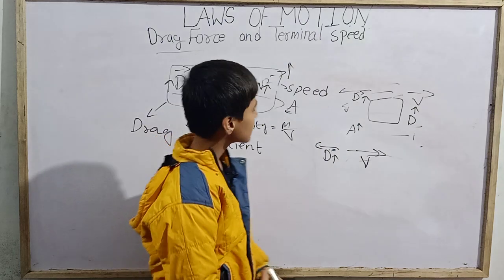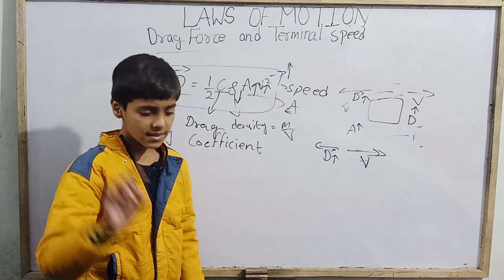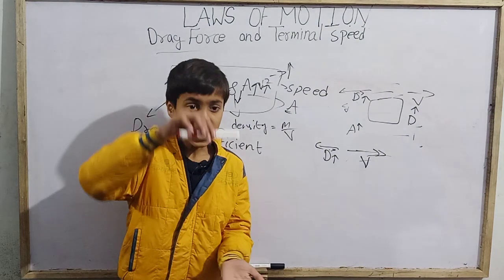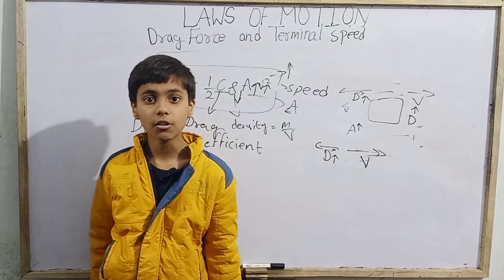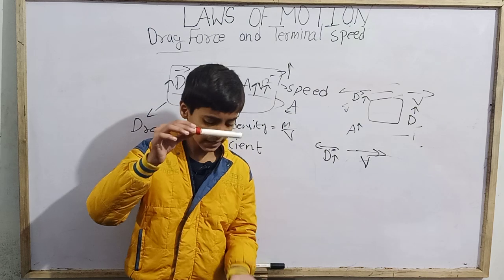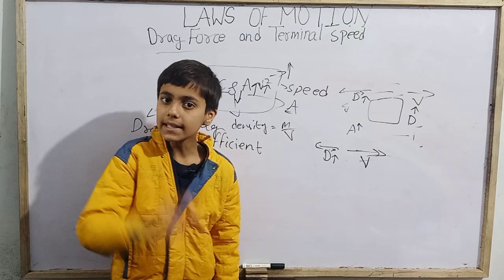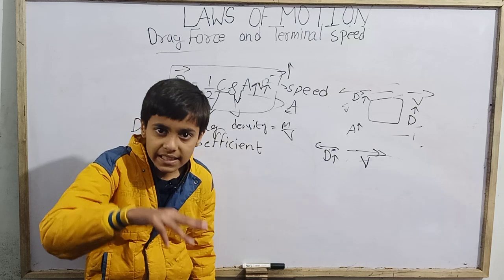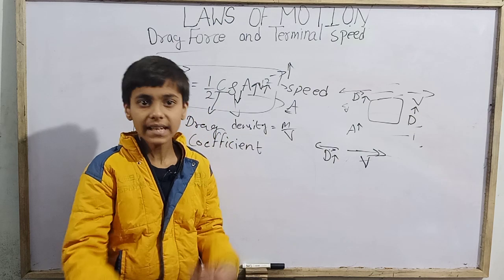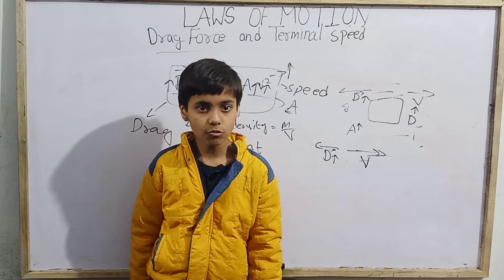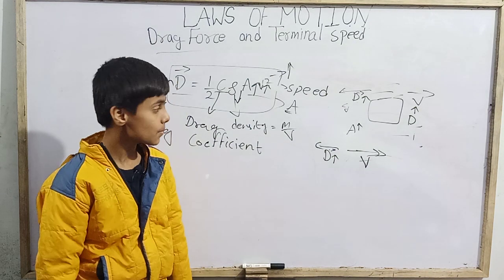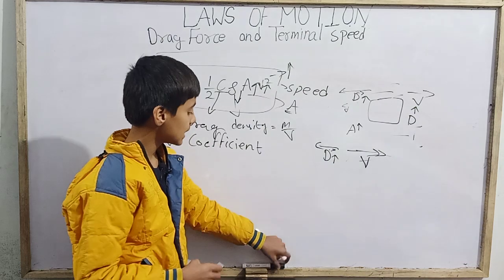Drag force and terminal speed are closely related. Suppose I take this marker and drop it — it falls down, and drag force acts upward. As it falls, its velocity increases downward due to gravity. Its speed increases at a constant rate called g, which is 9.8 meters per second squared near the surface of the Earth.